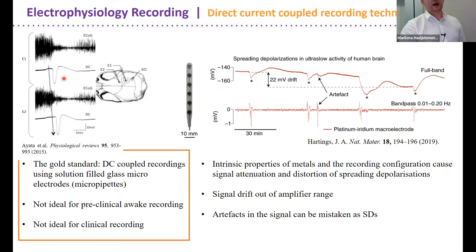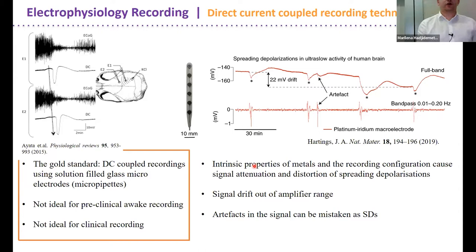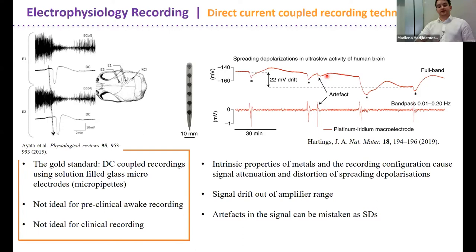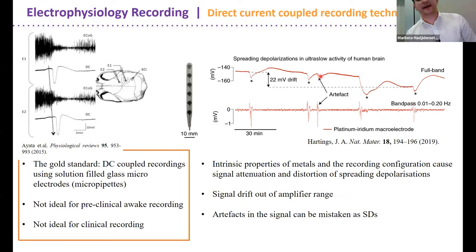The issue is that we need to look at new technologies to map and monitor these signals, because glass electrodes are not ideal for preclinical awake recordings or clinical recordings. Currently in clinic we have platinum iridium electrode strips, which can detect spreading depolarizations. However, the intrinsic properties of the metals and the recording configuration cause attenuation and distortion of these ultra-slow signals, there is significant signal drift outside the amplifier range, and artifacts look exactly like spreading depolarizations — making them very difficult to differentiate.